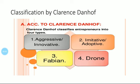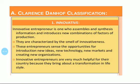According to Clarence Danhoff, entrepreneurs are generally classified under four heads: Innovative Entrepreneurs, Imitating Entrepreneurs, Fabian Entrepreneurs, and Drone Entrepreneurs. These are the four classifications of entrepreneurs as per Clarence Danhoff. The first one is the Innovative Entrepreneur. Such entrepreneurs are highly aggressive in collecting information pertaining to their business and making innovative changes to prosper in the business.